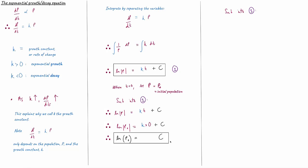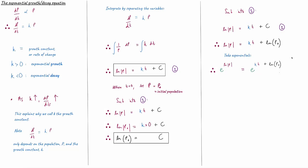We substitute c back into equation number one, giving us a new equation. Now we want to get rid of the natural log on the left-hand side. Remember that the natural log is log to the base e, and the opposite of taking log to the base e is taking exponentials. So we raise e to the power of both sides: e to the power of the left-hand side equals e to the power of the right-hand side. We then split up the exponential on the right-hand side — the plus sign can be separated into two exponentials, since multiplying exponentials means adding the powers.